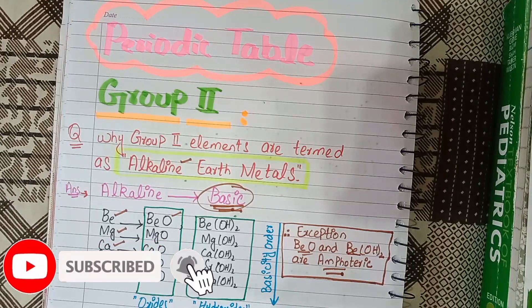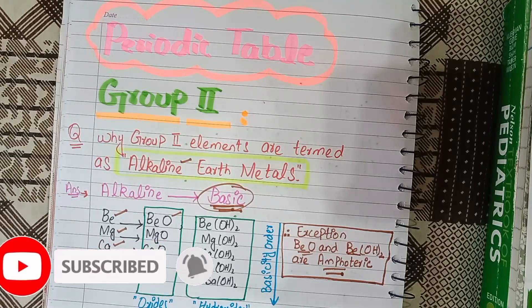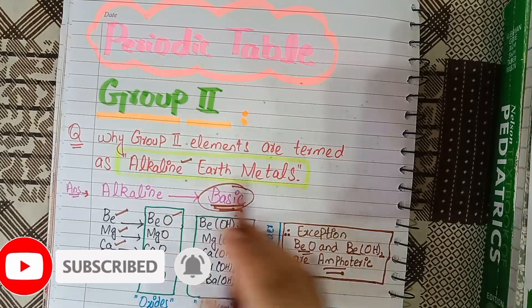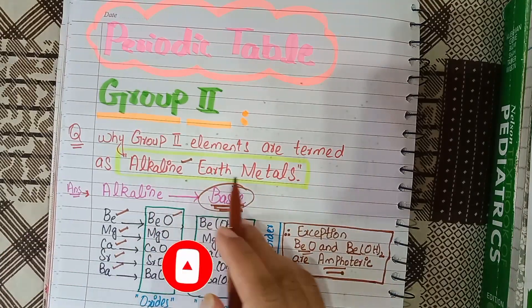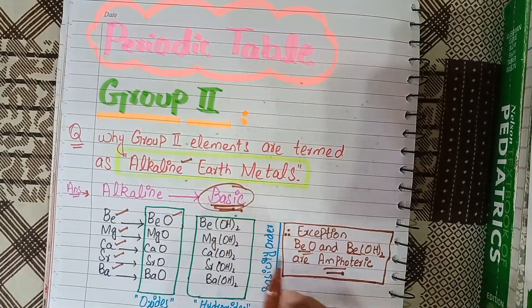Bismillahirrahmanirrahim. In this tutorial, we will try to understand why group 2 elements are termed as alkaline earth metals.